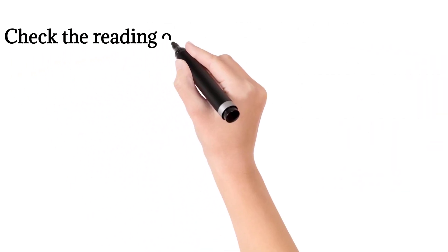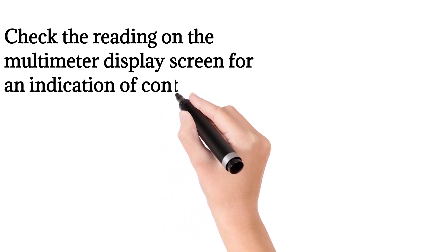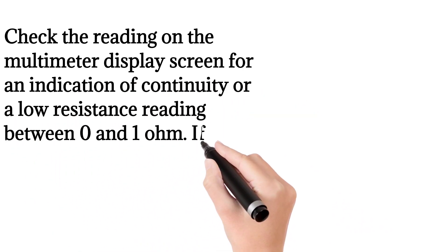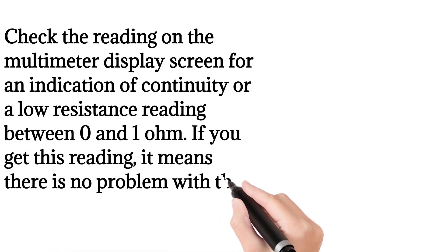Check the reading on the multimeter display screen for an indication of continuity or a low resistance reading between zero and one ohm. If you get this reading, it means there is no problem with the solenoid.